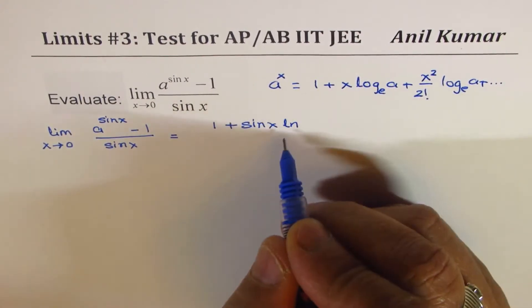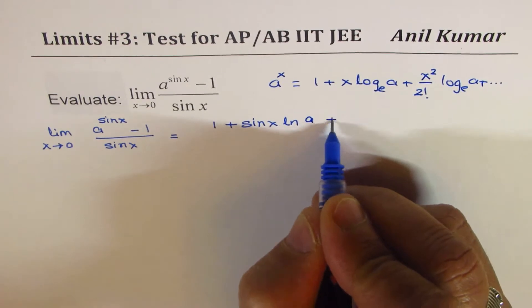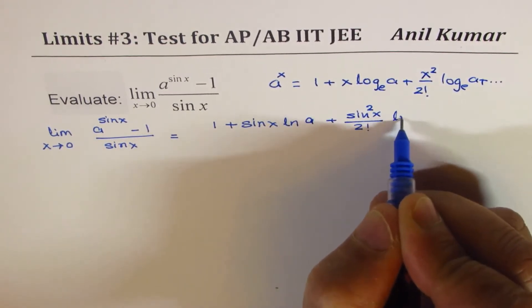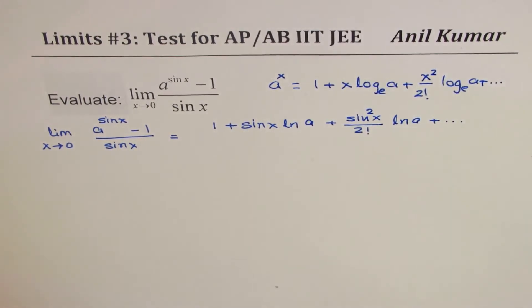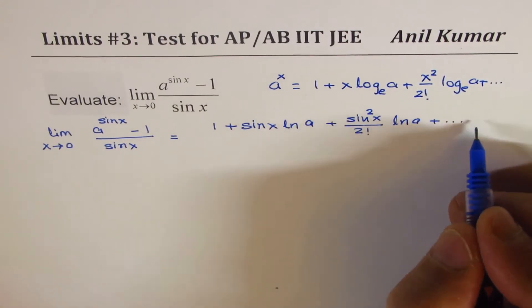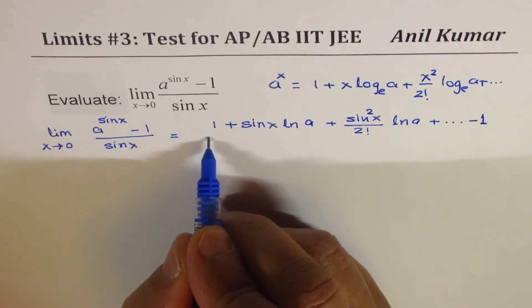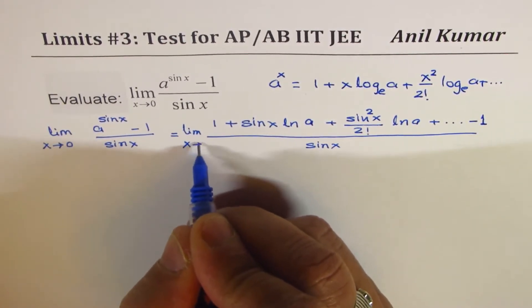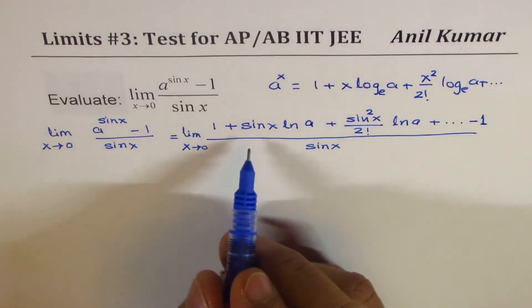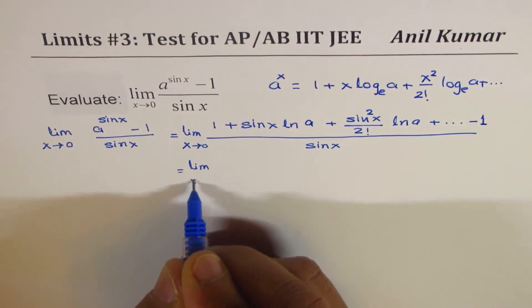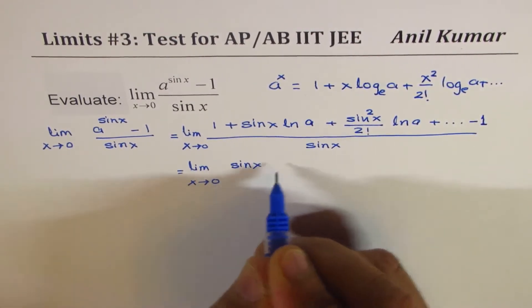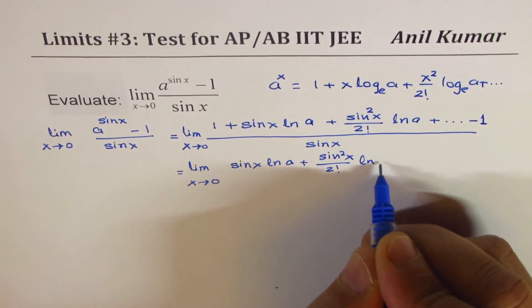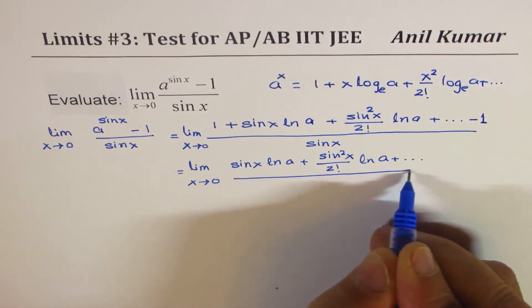Since anything log base e is ln, we write sin square x over 2 factorial times ln a, plus further terms. So that is a to the power of sin x. At the end we have minus 1 divided by sin x, as x approaches 0. Now 1 and minus 1 cancel, giving us sin x ln a plus sin squared x over 2 factorial times ln a plus further terms, all divided by sin x.